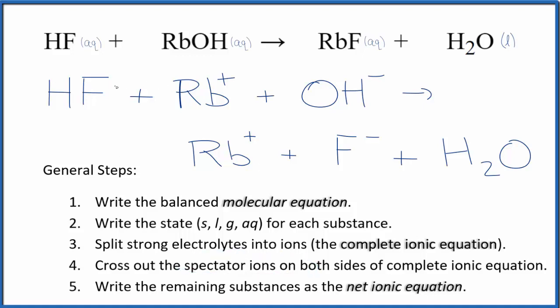So now we can cross out spectator ions. They're on both sides. In the reactants here, I have the rubidium ion, and in the products, that's a spectator ion. We can cross that out. Everything else is the same.